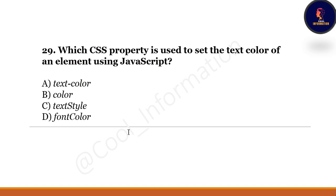Second-to-last question: Which CSS property is used to set the text color of an element using JavaScript? The correct option is B — the color property is used for that.